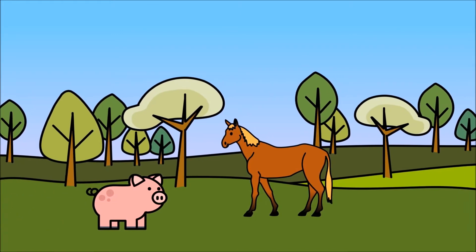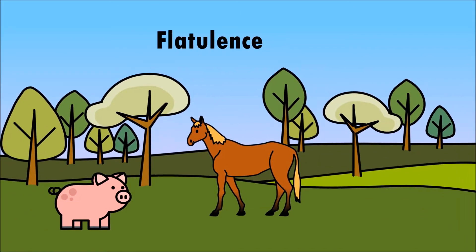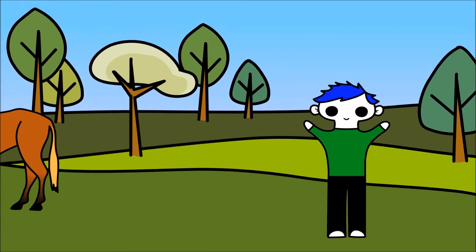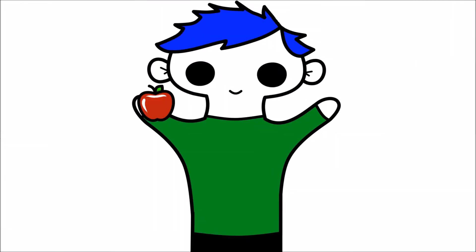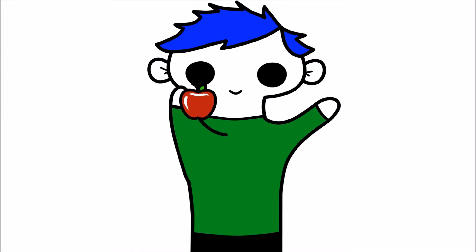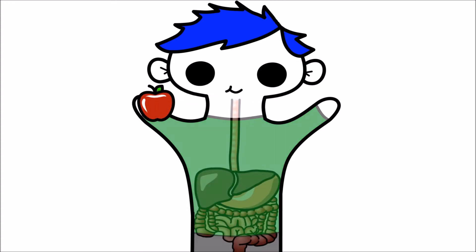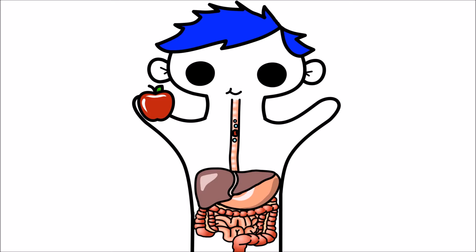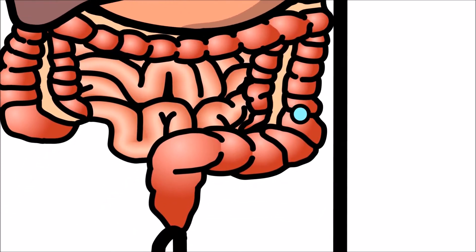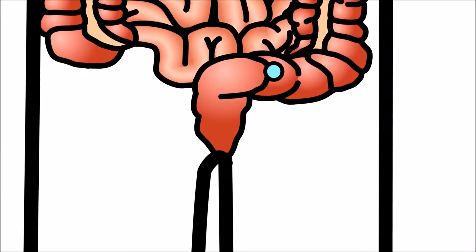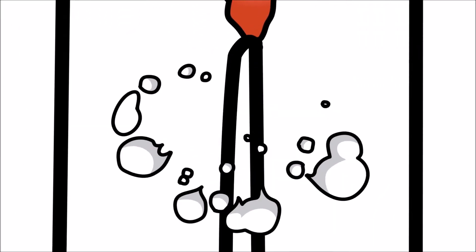Farts, also called flatulence, happen when your body lets out gas from your anus. There are a few reasons why we fart. When we breathe and eat food, we also swallow some air. This air makes its way through our digestive system and comes out the other end.